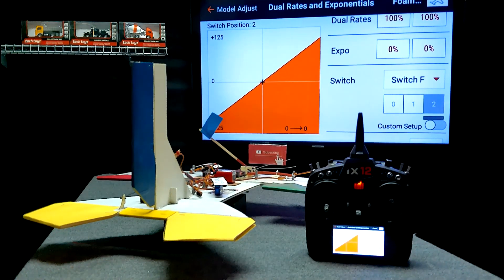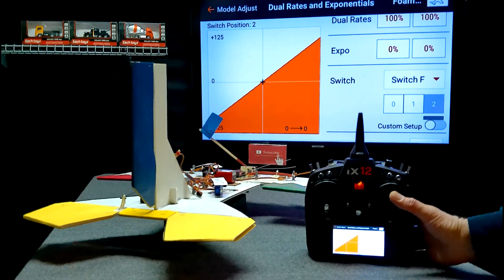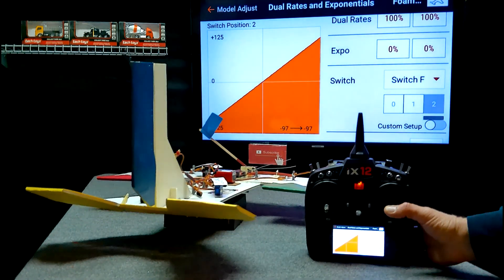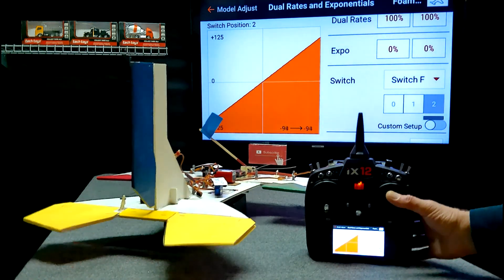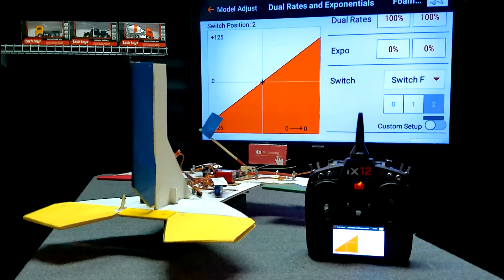We're in the setting with zero Expo and watch my thumb here and the yellow elevator. So as I'm giving it up elevator, the servo moves with it. It's simultaneously. As my thumb moves down halfway, the servo moves halfway.